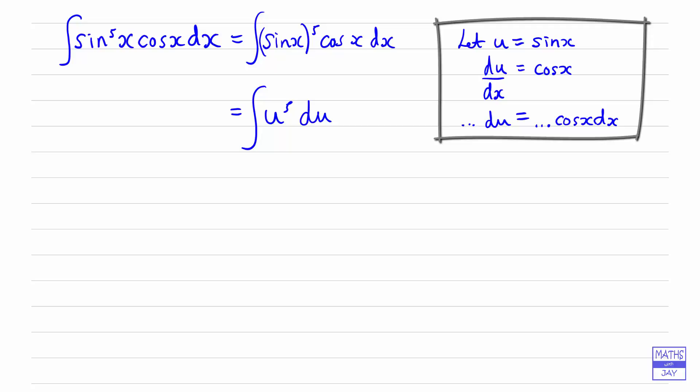To integrate u⁵, it's u to the 5 plus 1, so it's u⁶ over 6 plus c. Then we remember that u was actually equal to sin x, so it's (sin x)⁶/6 + c.